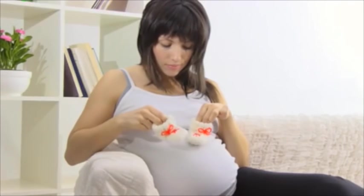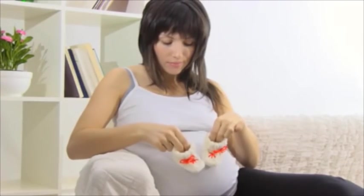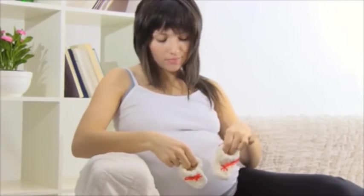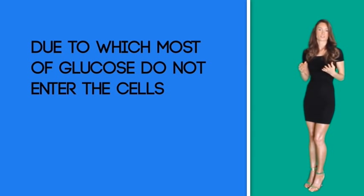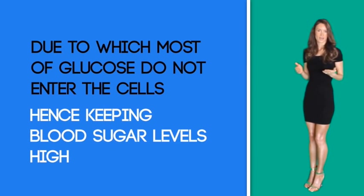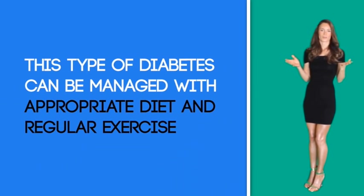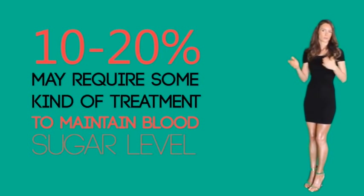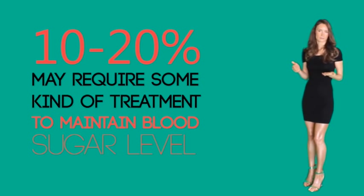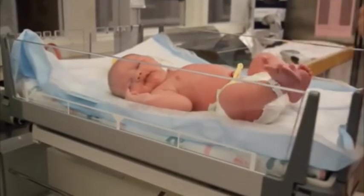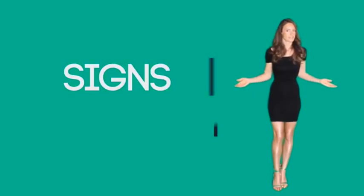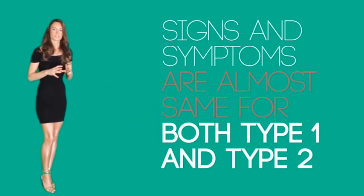Type 3 diabetes, called gestational diabetes, occurs during pregnancy. In some women, blood glucose concentration is relatively high and their bodies do not produce sufficient insulin, keeping blood sugar levels high. This type is generally managed with appropriate diet and regular exercise, but about 10 to 20 percent of patients may require treatment to maintain blood sugar levels. If left uncontrolled, complications to the infant may occur both during gestation and at birth, and the newborn may be larger than normal.